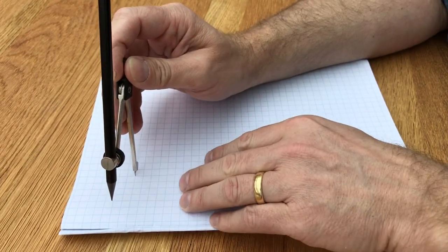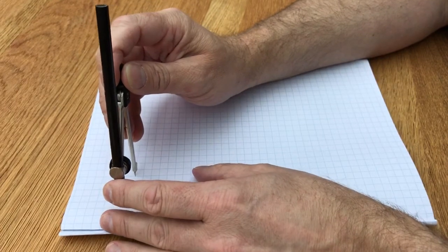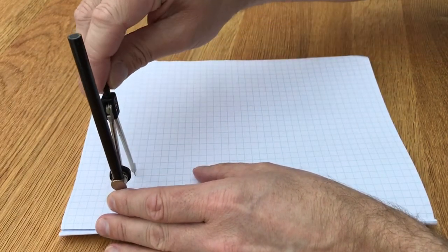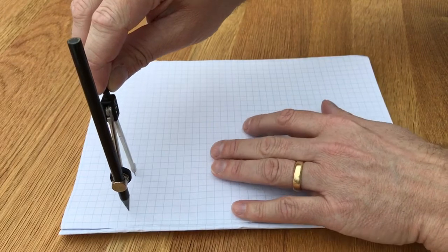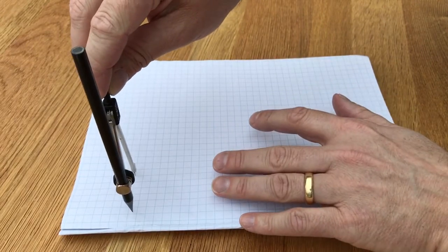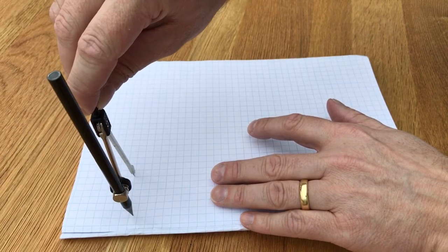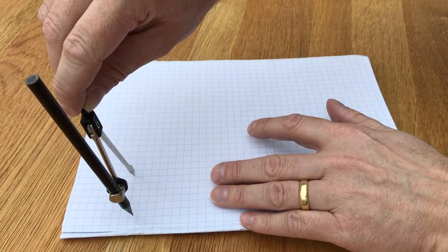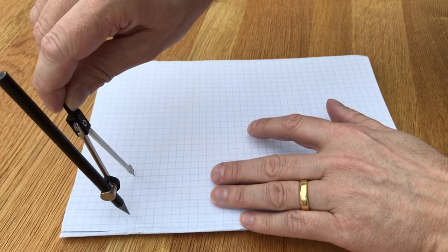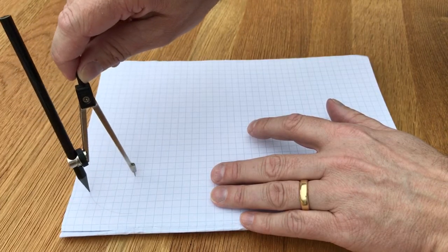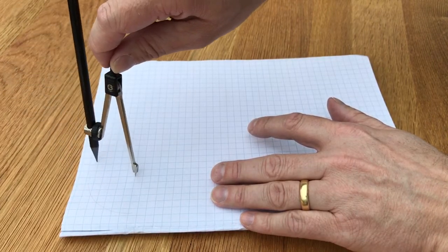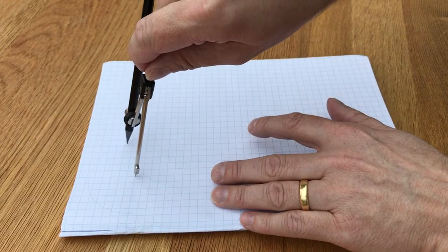I've got squared paper, so I'm going to put it on the point where the lines cross and I'm going to just draw circles. I put the pencil on the paper and carefully holding the top of the compasses, I move the pencil round really carefully. You'll notice it's a nice sharp pencil.